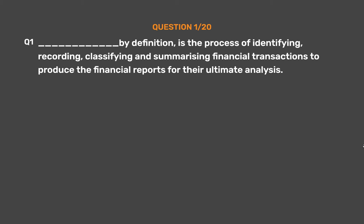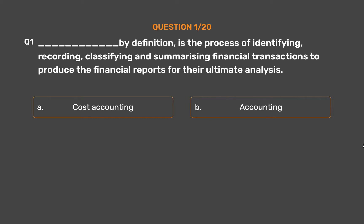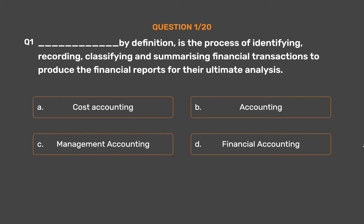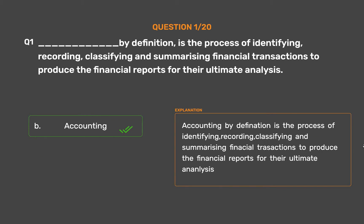Question number 1. By definition, underscore is the process of identifying, recording, classifying and summarizing financial transactions to produce the financial reports for their ultimate analysis. Option A: Cost Accounting. Option B: Accounting. Option C: Management Accounting. Option D: Financial Accounting. The correct answer is Option B — Accounting. Accounting by definition is the process of identifying, recording, classifying and summarizing financial transactions to produce the financial reports for their ultimate analysis.